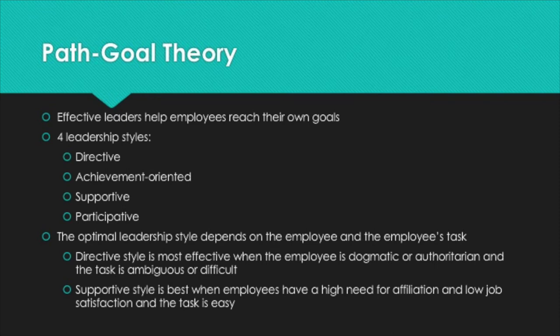According to Path Goal Theory, effective leaders help employees reach their own goals. There are four leadership styles: directive, achievement-oriented, supportive, and participative. The optimal style depends on the employee and the employee's task. For example, the directive style is most effective when an employee is dogmatic or authoritarian and the task is ambiguous or difficult. The supportive style is best when an employee has a high need for affiliation and low job satisfaction and the task is easy. Just think about leaders helping each employee on their own path toward their own goals.